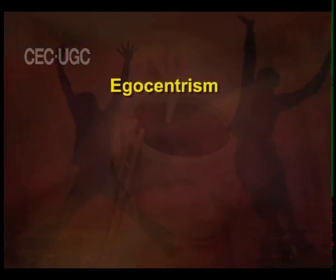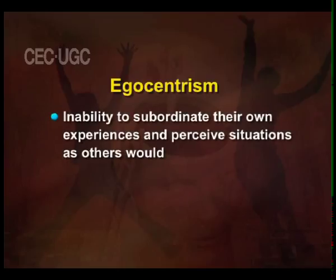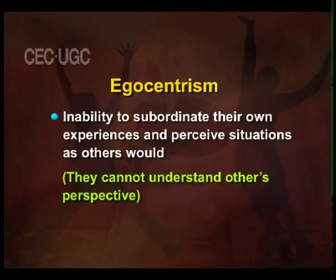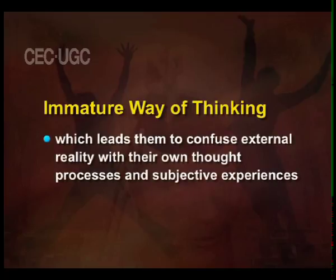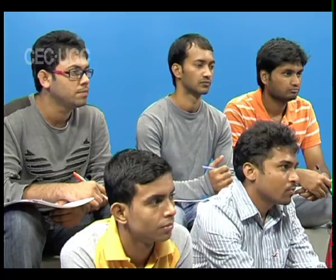The two factors that contribute to young children's moral realism are: firstly, egocentrism — that is, inability to subordinate their own experiences and perceive situations as others would, meaning they cannot understand others' perspectives; and secondly, an immature way of thinking which leads them to confuse external reality with their own thought processes and subjective experiences. Therefore, children in this stage perceive rules as given by authority and not to be changed or questioned. They believe in imminent justice and perceive any accident as punishment for their wrongdoings, and they cannot understand others' perspective.